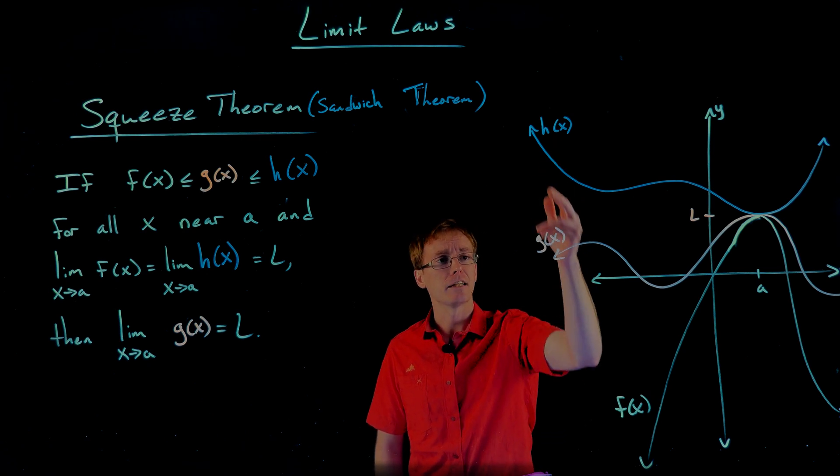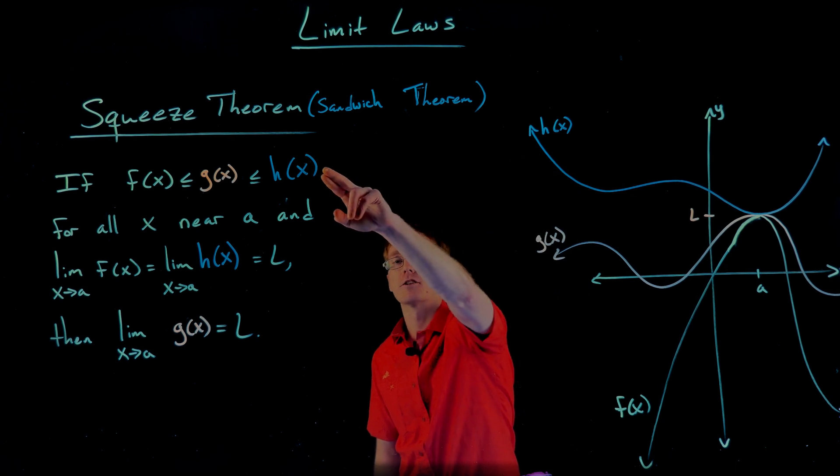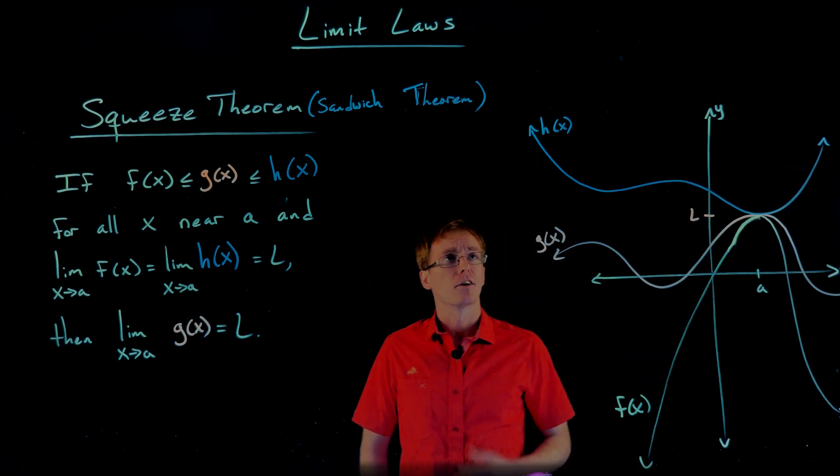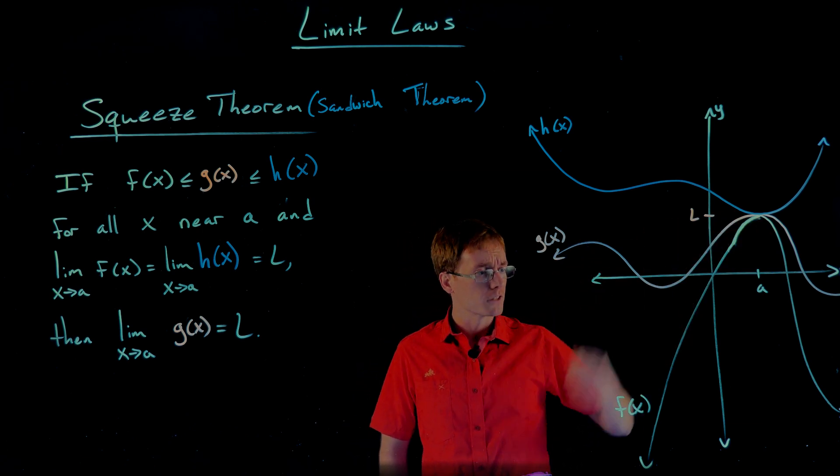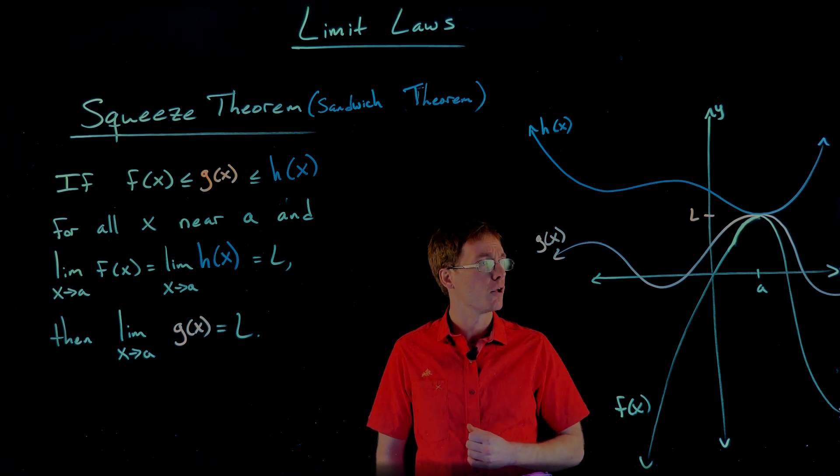Here are our three functions: h, g, and f. h is our biggest function, right? It's greater than the other two everywhere - h is always bigger than g and f. g is our middle function. It's always falling between h and f, and f is our smallest function.